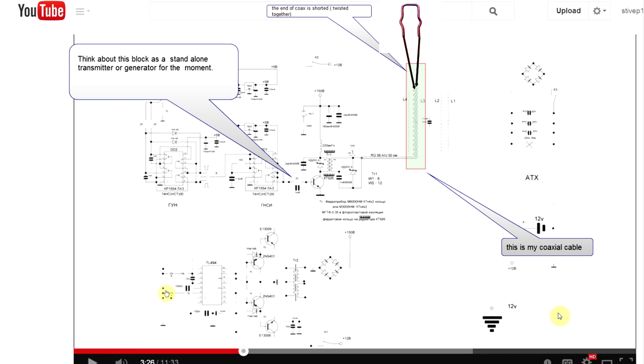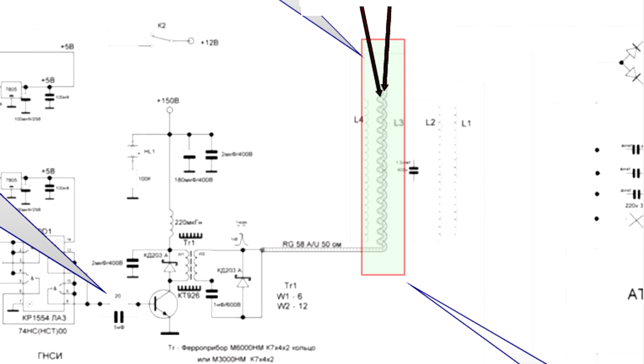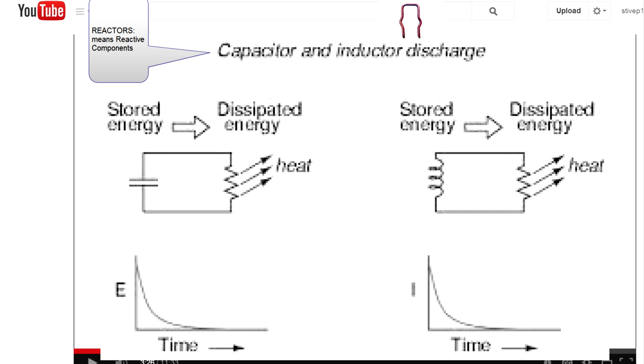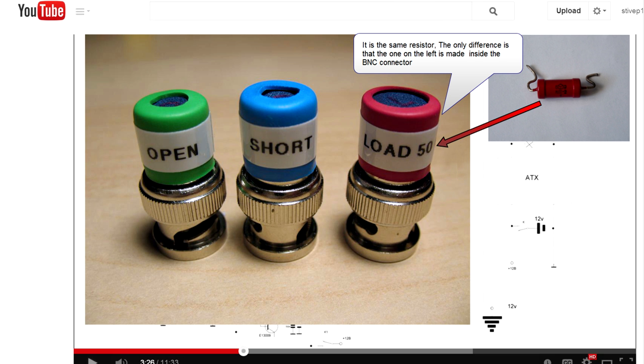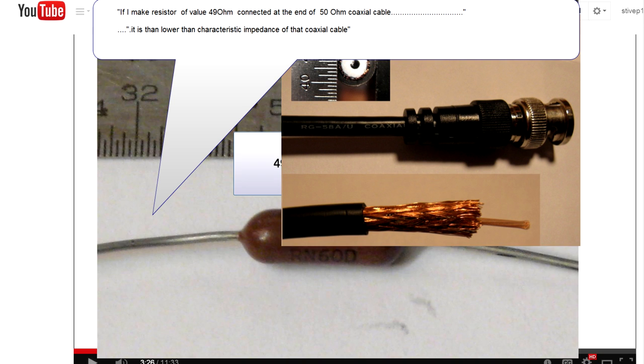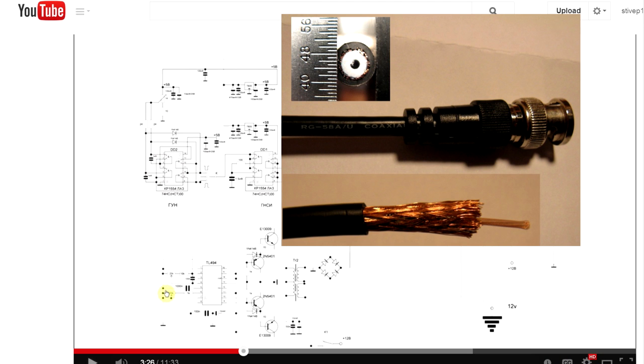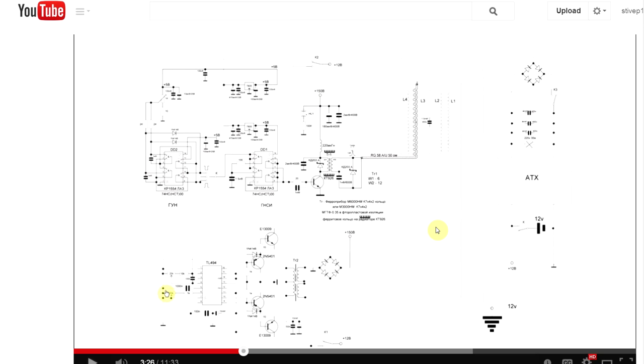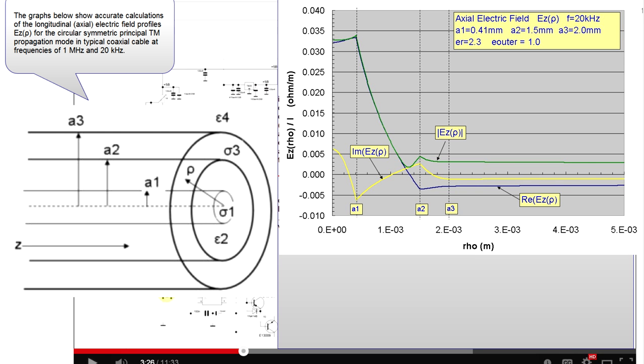Of all the possible resistors you can put on the end, everything from a short circuit (let's call it zero ohm) to a complete open circuit (let's call it infinity), you've got a whole continuous range of resistors from short to open. You also have a whole continuous range from negative reactance (which is capacitive) to positive reactance (which is inductive). Let's just talk about resistors at first. At 50 ohms, all the energy gets absorbed. If I make the resistor 49 ohms on a 50 ohm cable, it's lower than the characteristic impedance of the cable.